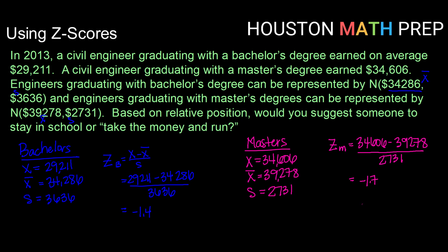So while the earning potential overall seems to be higher with a master's degree, it seems like they are starting further below the average salary to start. Based just on relative position of starting salaries, it looks like you are better off going out and starting with a bachelor's degree, for civil engineers in 2013 anyway.